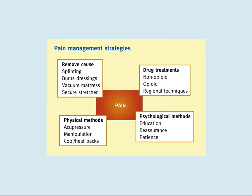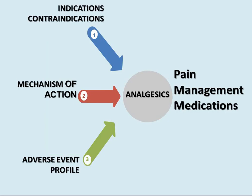Pain management strategies include four directions: drug treatments — non-opioid, opioid, and regional techniques; psychological methods — education, reassurance, patience; physical methods — acupressure, manipulation, cool or heat packs; and removal of cause — splinting, bone dressings, vacuometrics, secure stretcher. For pain management medication, we will present indication and contraindication, mechanism of action, and adverse event profiles.